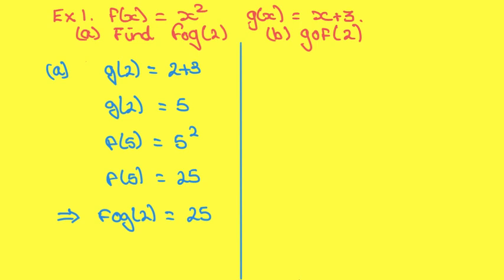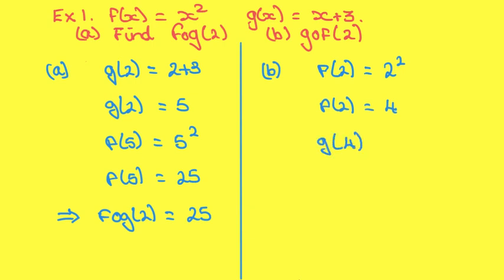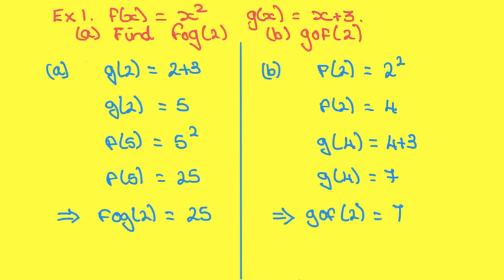Part b: find g of f of 2. So first do f of 2, which is equal to 2 squared, so f of 2 is equal to 4. Then put 4 into g, so g of 4 is equal to 7. Therefore, g of f of 2 is equal to 7.